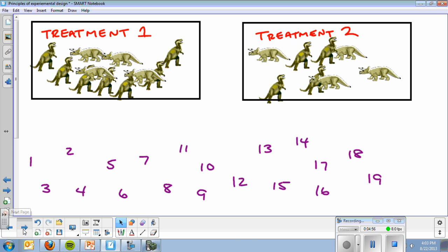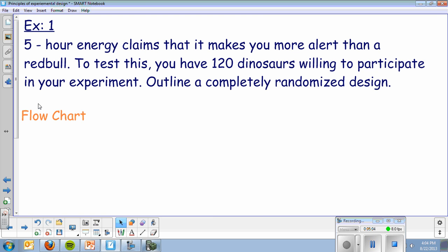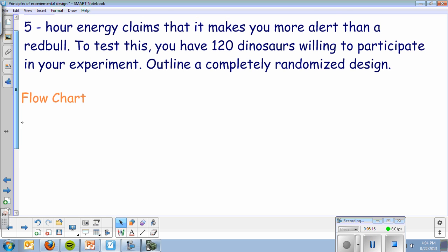Here's an actual example of what you would see on a test, quiz, AP exam, assignments in class. 5-hour energy claims that it makes you more alert than Red Bull. To test this, you have 120 dinosaurs willing to participate in your experiment. Outline a completely randomized design. So, you're going to make the flow chart.